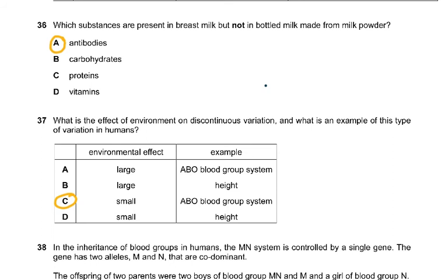Question 36: which substances are present in breast milk but not in bottled milk made from milk powder? Antibodies. The diseases the mother has had mean she has antibodies, which are passed on to the infant in breast milk. These antibodies are not present in bottled milk — we have not been able to add antibodies to milk powder.